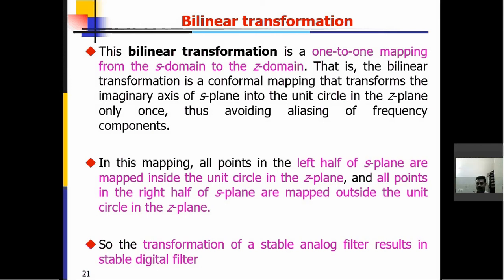All points in the left half of the S-plane are mapped inside the unit circle in the Z-plane, and all points in the right half of the S-plane are mapped outside the unit circle in the Z-plane. Therefore, the transformation of a stable analog filter results in a stable digital filter.